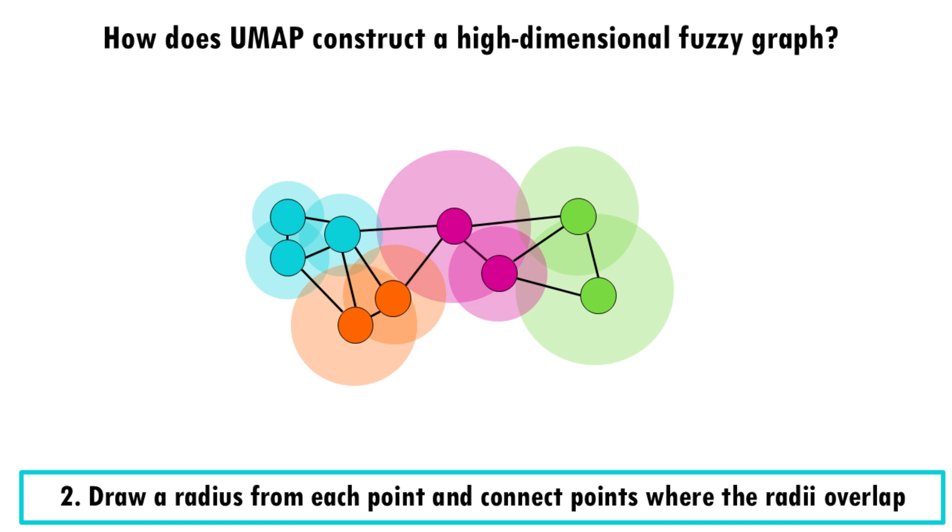As you can see, the radius really matters when it comes to deciding whether two cells are connected or not. Notice that the radius is chosen locally, meaning that each cell has a different radius. I'll explain how UMAP chooses a radius for each cell in just a second.